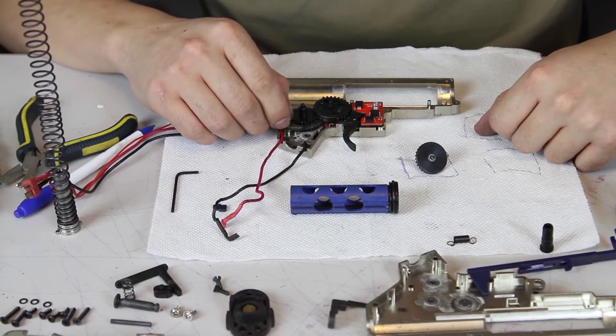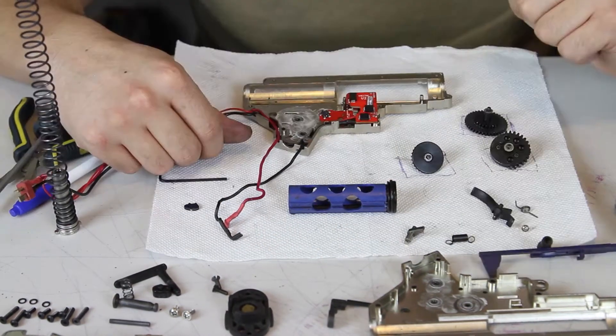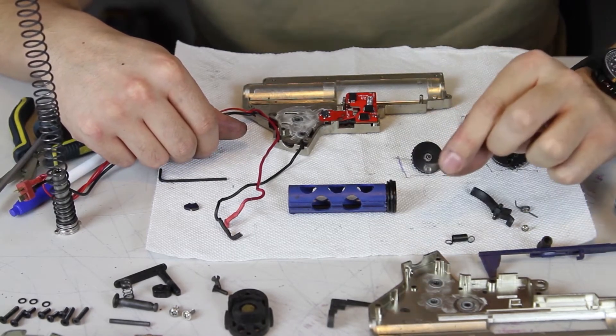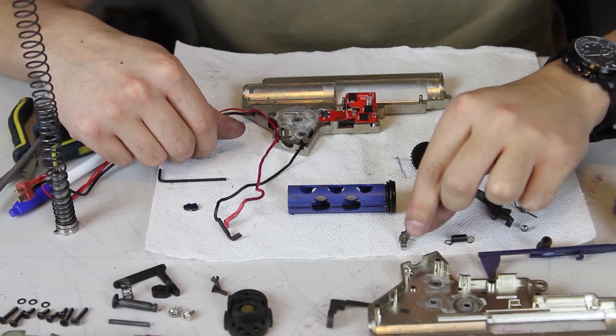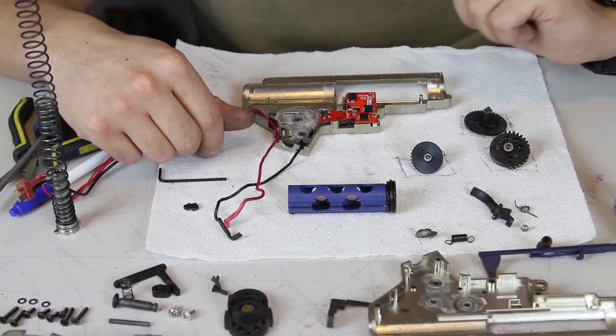You will also have the anti-reversal latch, which has a small spring that keeps it pushing upwards. This latch is easy to take out, but can be a bit tricky to put back in later. It is generally advisable to keep an anti-reversal latch in your gun, even if you have an upgraded MOSFET or fire control chip that might let you remove it.